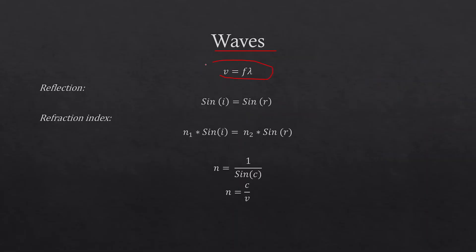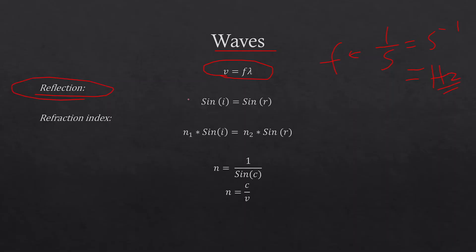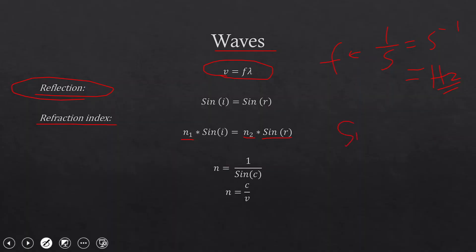For waves, v = fλ, where v is velocity, f is frequency, and λ is wavelength. Frequency is measured in Hz (s⁻¹). For reflection: angle of incidence equals angle of reflection. For refraction, Snell's law: n₁ sin i = n₂ sin r, where n₁ and n₂ are the refractive indices of the first and second media, and i and r are the angles of incidence and refraction.